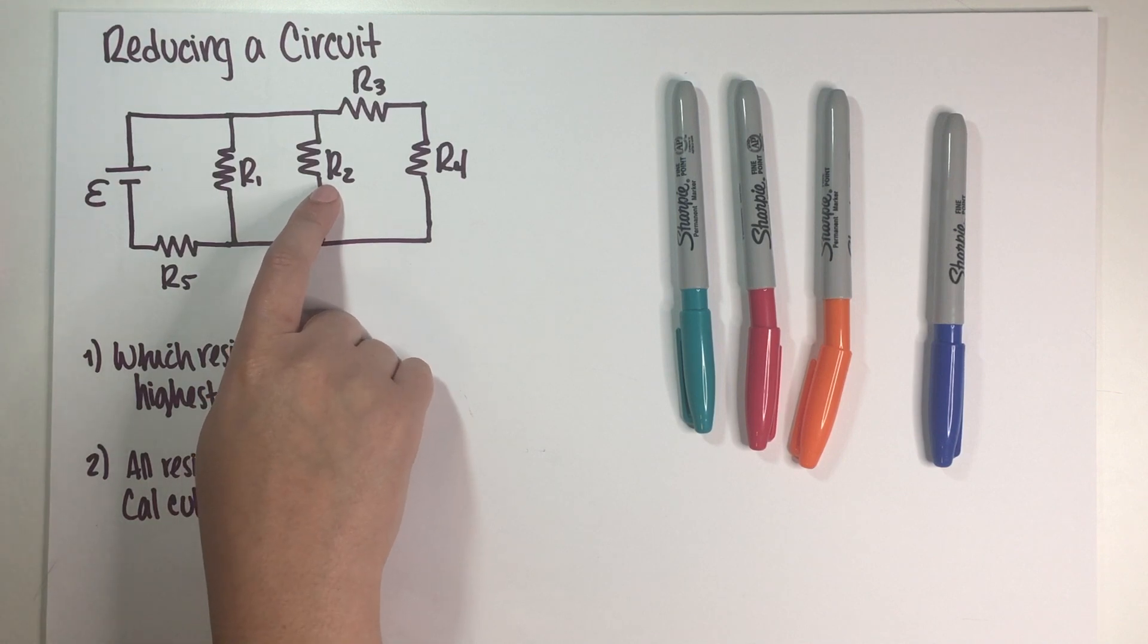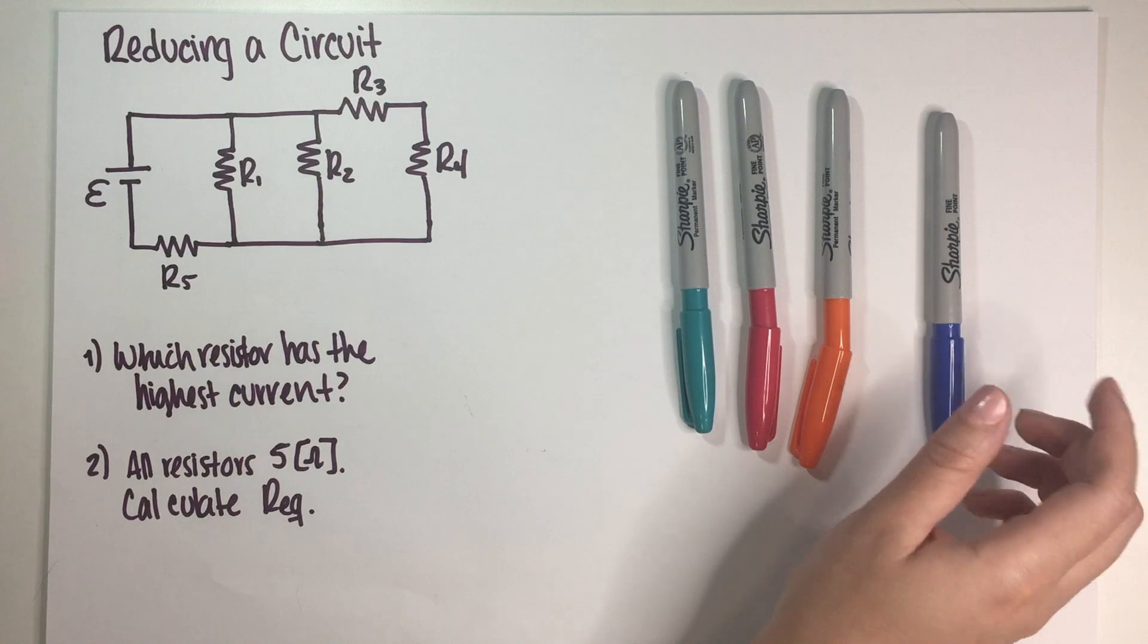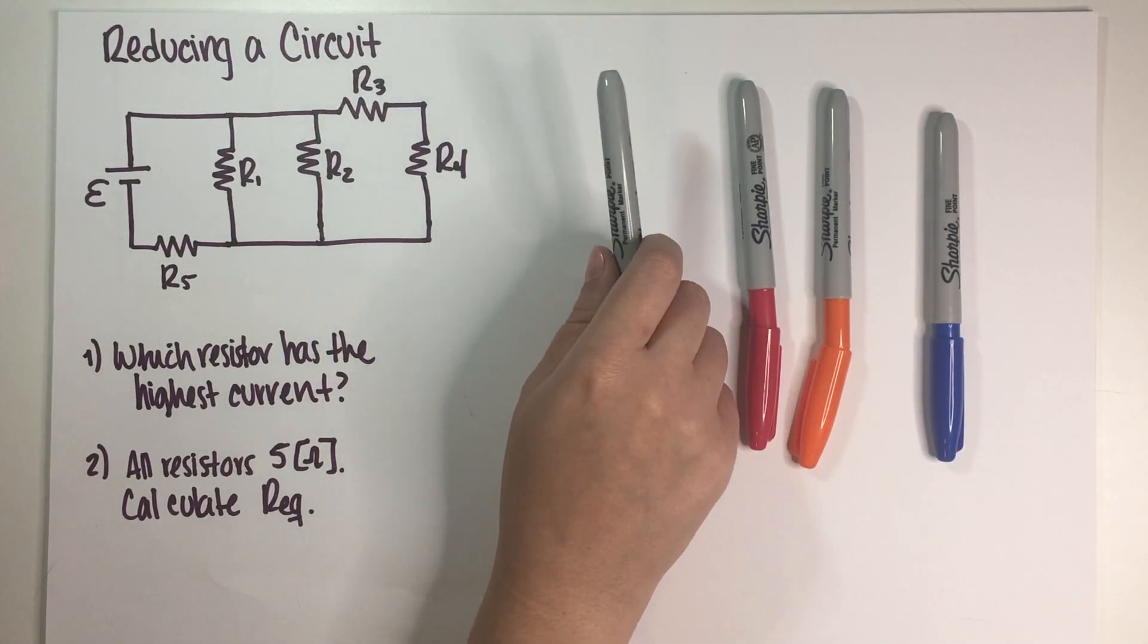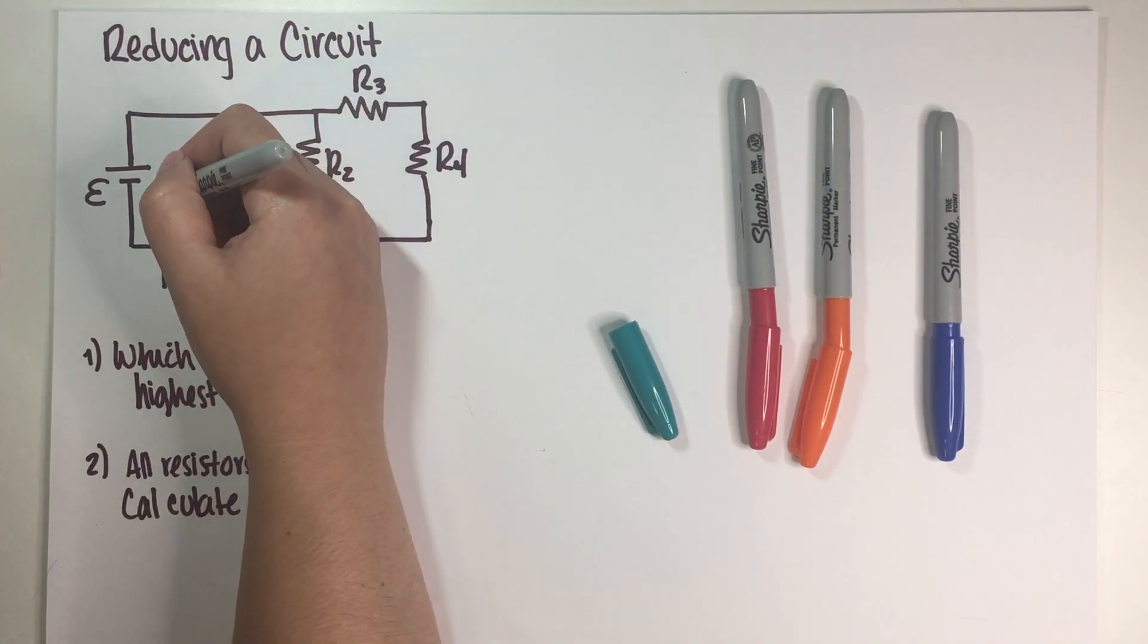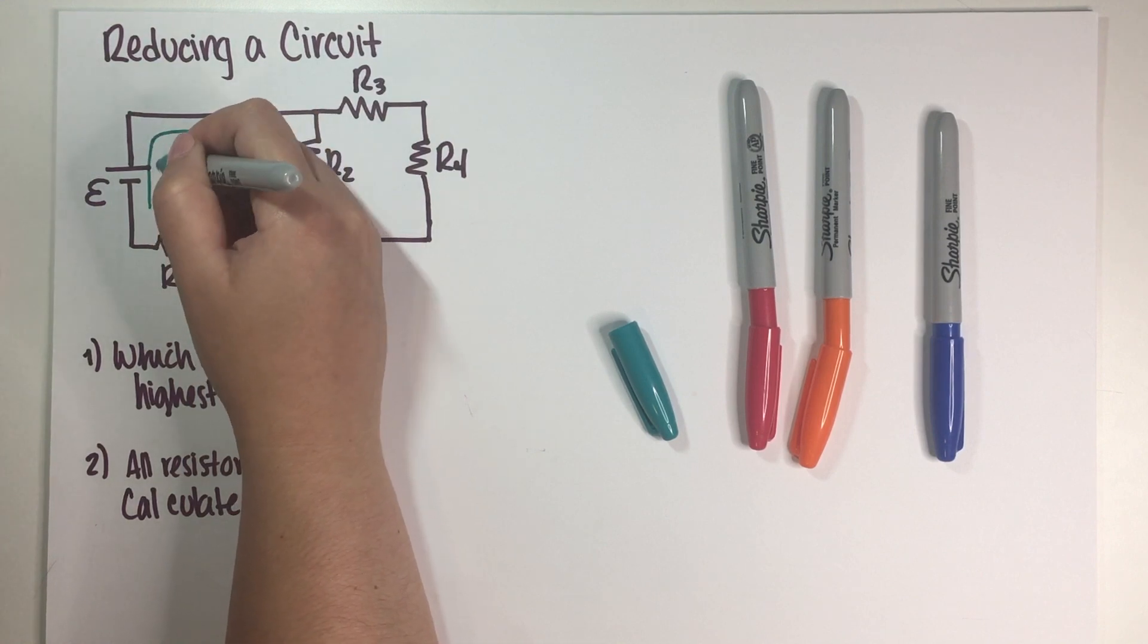So obviously the first thing we have to do is figure out how many currents we have in our system, and then figure out if there's a way in which we can rank them, or at least figure out which one has the highest current, because that's really all we care about. So I always start with the total current, which is the current that crosses the battery.